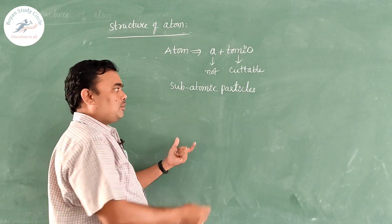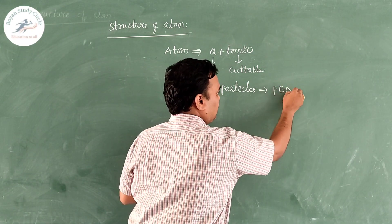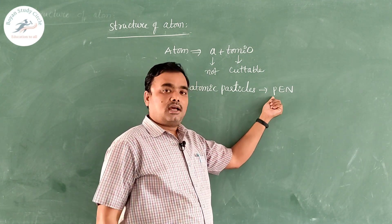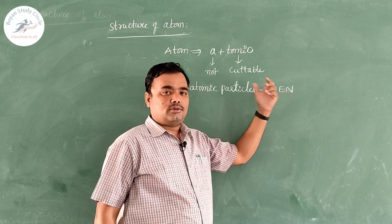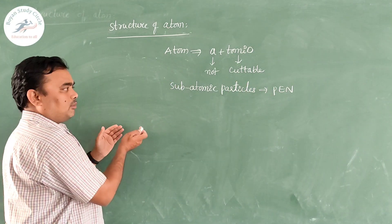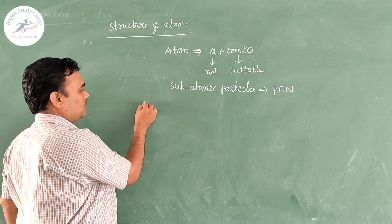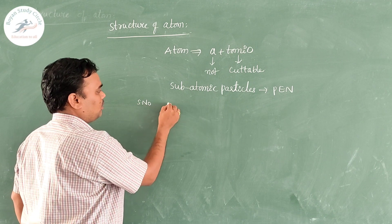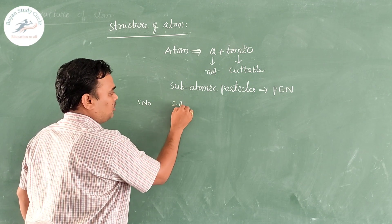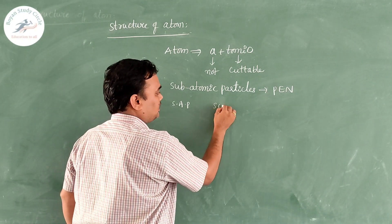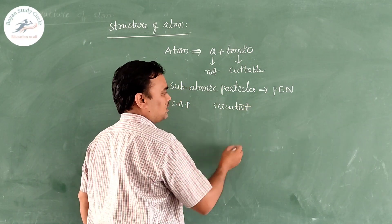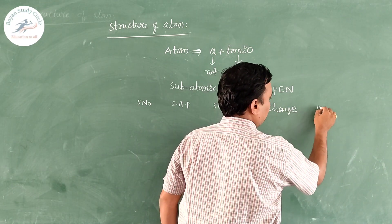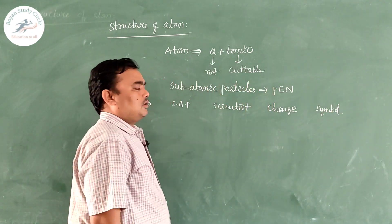These subatomic particles — already you know them — they are PEN, a word to remember the subatomic particles: proton, electron, and neutron. Some fundamentals we have to recapitulate from our 9th class syllabus — the fundamental particle or subatomic particle, the scientist who invented it, the charge associated with it, and the symbol with which it is shown.